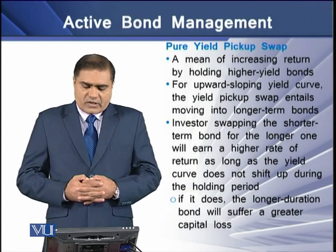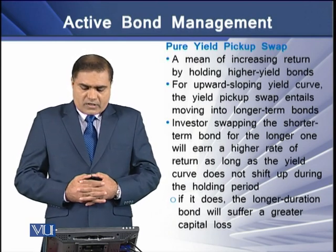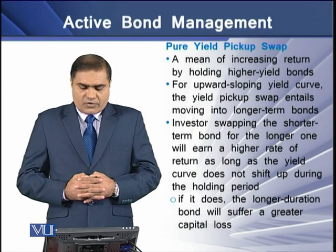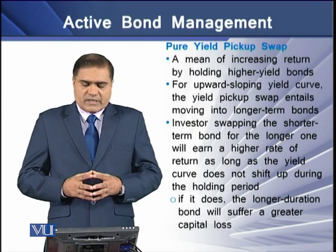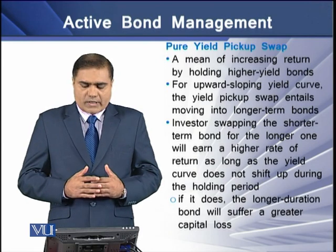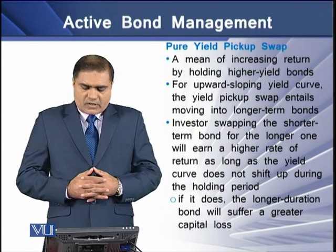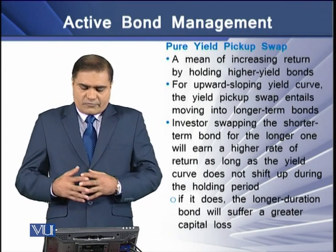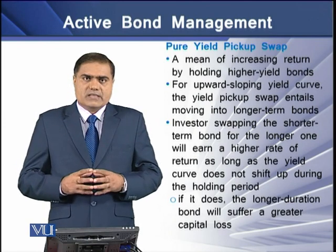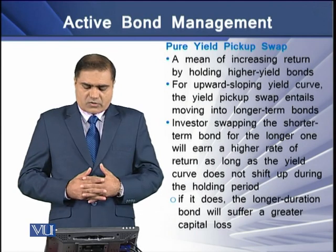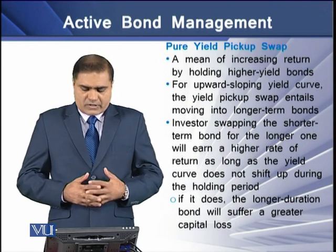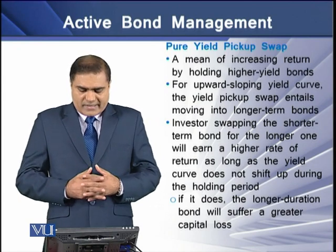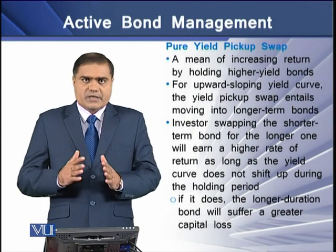Next is the pure yield pick up swap, which is a means of increasing return by holding higher yield bonds. For an upward sloping yield curve, the yield pick up swap entails moving into longer term bonds. An investor swapping shorter term bonds for longer period bonds will earn a higher rate of return as long as the yield curve does not shift up during the holding period. If it does shift up, the longer duration bond will suffer a greater capital loss.